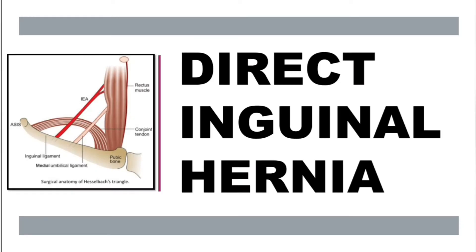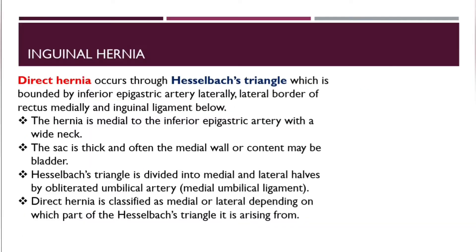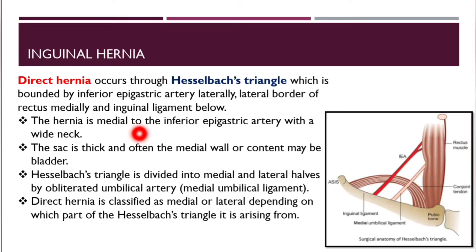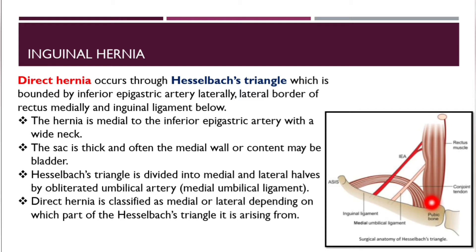Let's talk about direct inguinal hernia. Direct inguinal hernia occurs through Hesselbach's triangle, which is bounded by the inferior epigastric artery laterally, the lateral border of the rectus abdominis medially, and inferiorly by the inguinal ligament. The hernia is medial to the inferior epigastric artery.